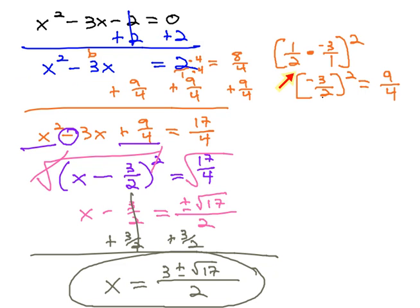So we completed the square by finding half of b and squaring it, and adding it to both sides. That gave us a perfect square, which we could easily and quickly solve for x.